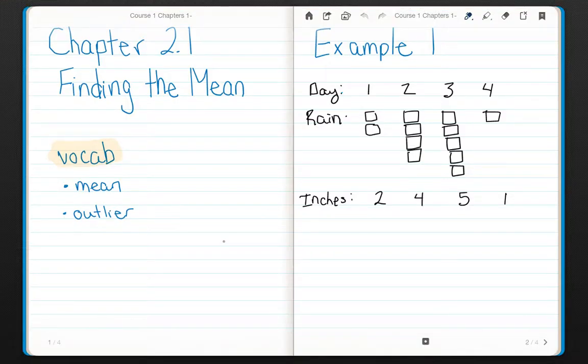Chapter 2.1 Finding the Mean. Before we begin, if you can please copy down and pause while you do this, the vocabulary for this lesson, which are Mean and Outlier, each found on page 61 and 62, and then press play again to start the examples.